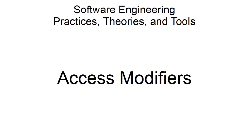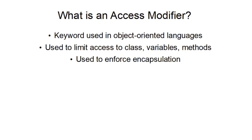Welcome back nerds. Today we're going to be talking about access modifiers. So what are access modifiers? They're keywords used in object-oriented languages. They're used to limit access for various things and also used to enforce encapsulation. I know we haven't gone over encapsulation yet, but one day.